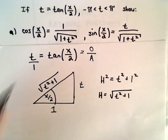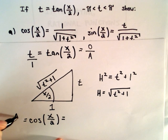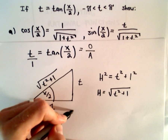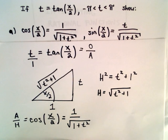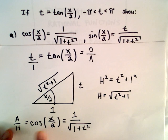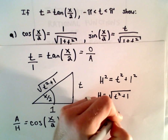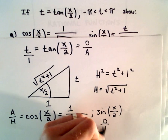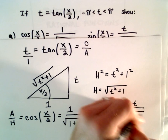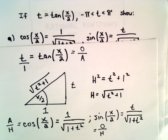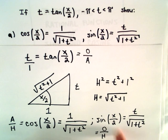To justify part a, it's just a matter of reading things off the triangle. Cosine of x over 2 — cosine is the adjacent side over the hypotenuse. The adjacent side is 1, and the hypotenuse is the square root of 1 plus t squared. So cosine of x over 2 equals 1 over the square root of 1 plus t squared. Likewise, sine of x over 2 — sine is the opposite side over the hypotenuse — gives us t over the square root of 1 plus t squared. In my examples, you'll see me using these substitutions to solve the problem.